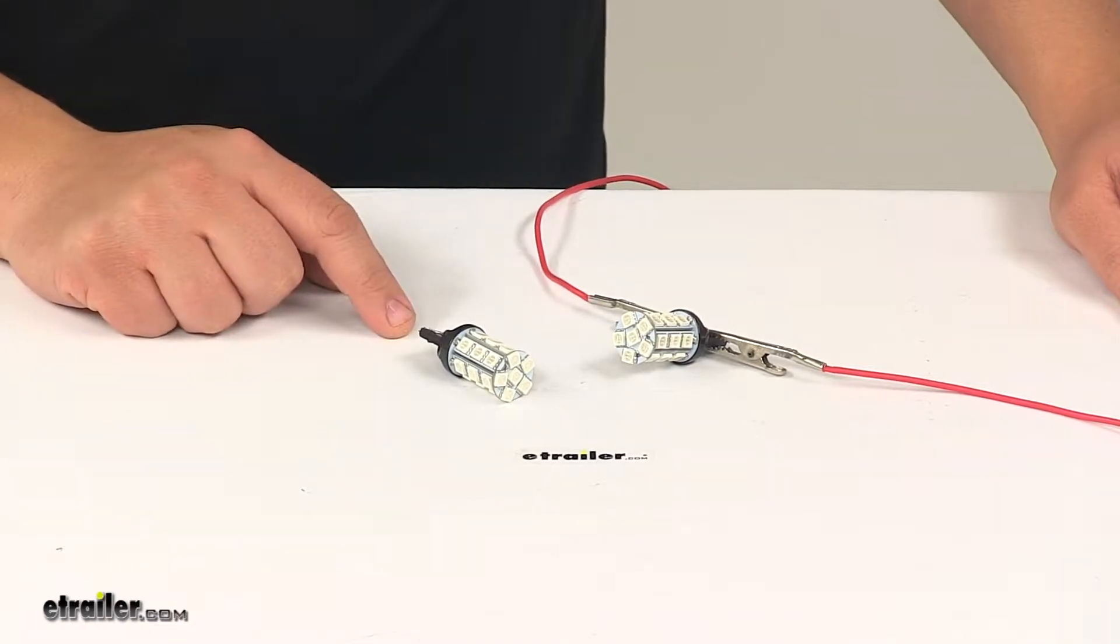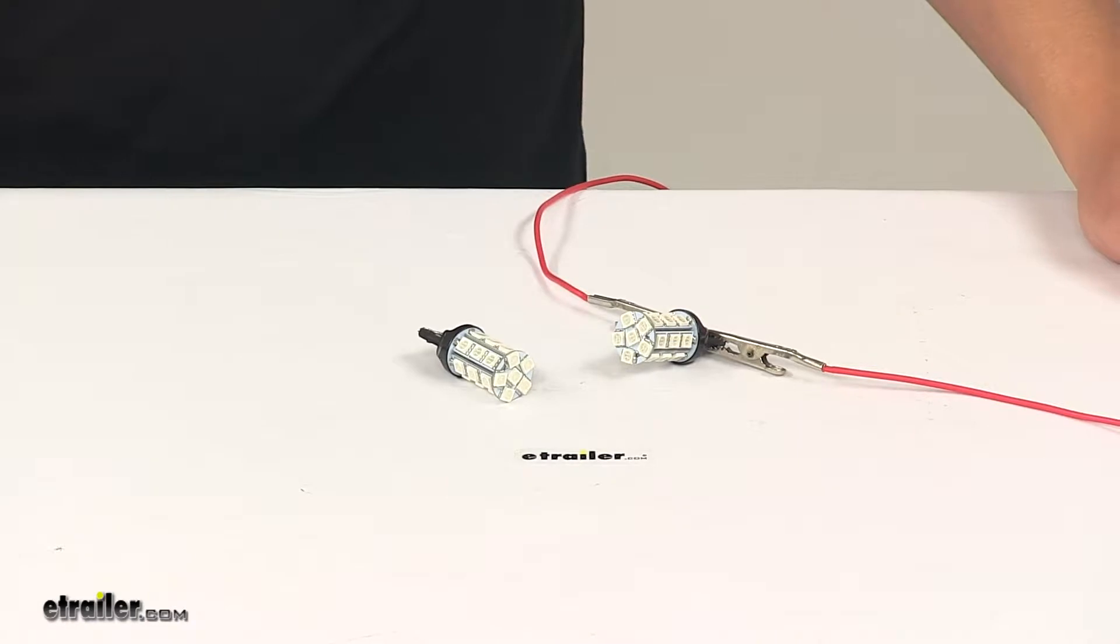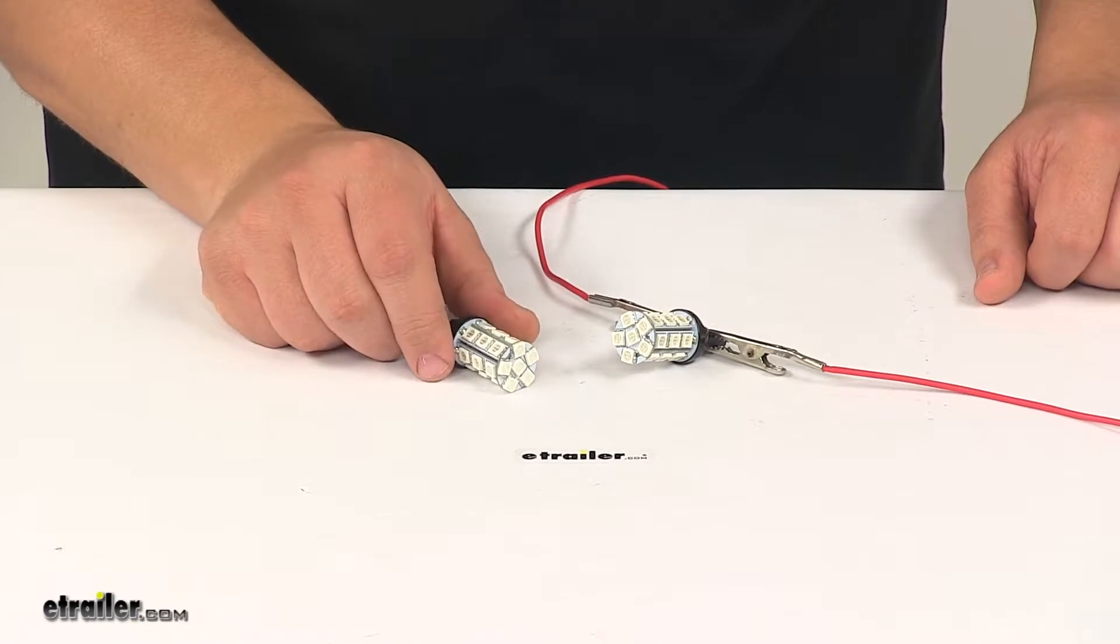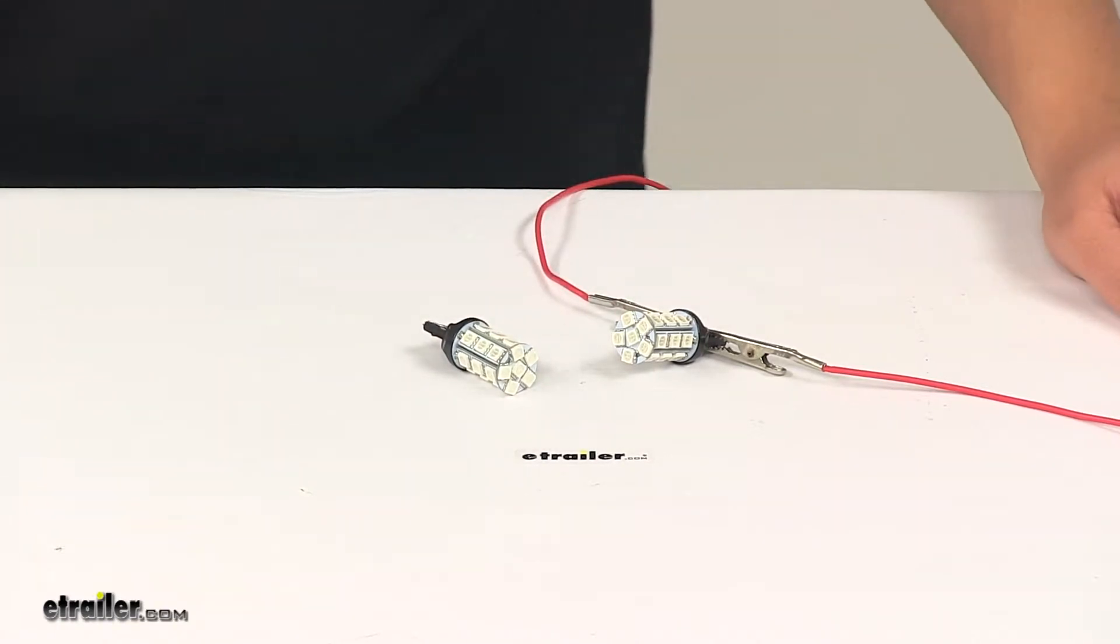The bright red light is produced by a total of 48 LEDs, that's 24 LEDs per bulb, and the light is emitted 360 degrees around each bulb. The LEDs have a 50,000 hour LED lifespan.